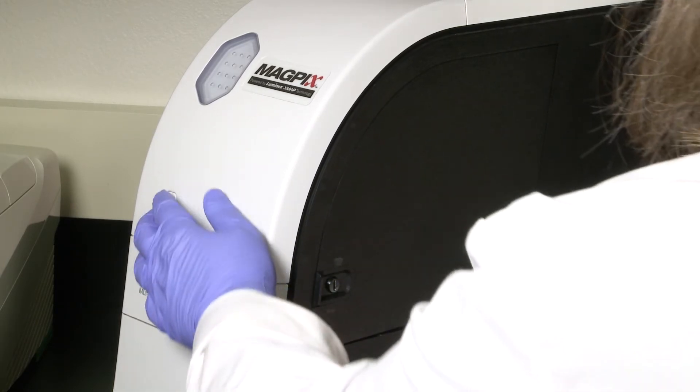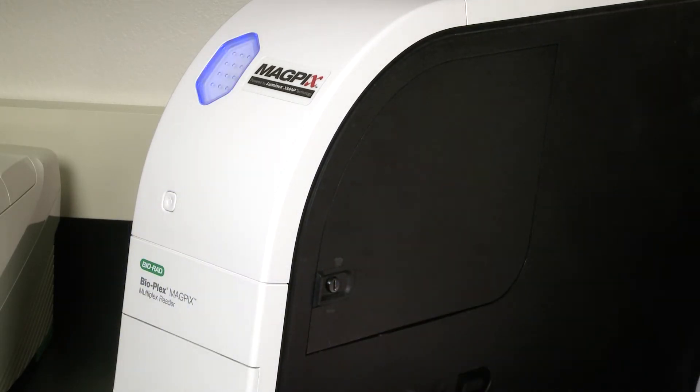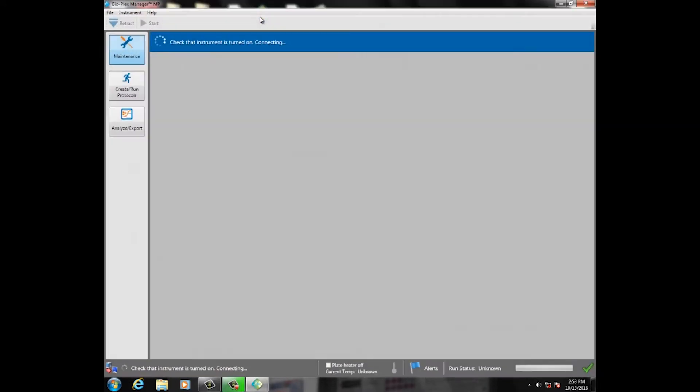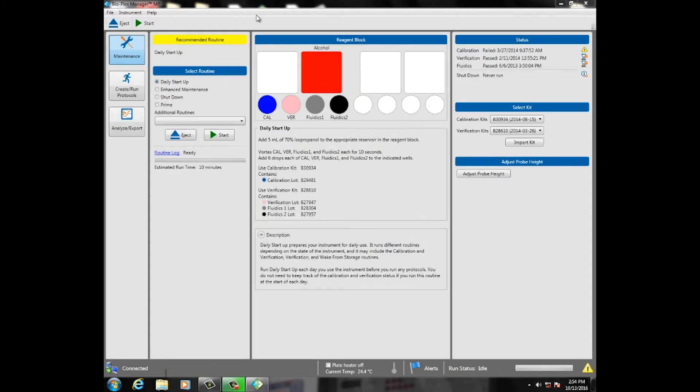Turn on the MagPix Reader and launch BioPlex Manager MP software. In the Maintenance tab, click on the Adjust Probe Height button.